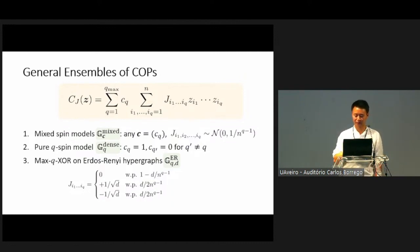An example is the so-called mixed spin model. It's defined for any sequence of coefficients C. You choose the Js to be randomly chosen from the standard Gaussian distribution with a variance normalized so that the maximum cost scales extensively linearly with the system size. You can also consider a special case of the mixed spin model, the so-called pure Q spin model, where you basically only restrict yourself to the specific Q body couplings.